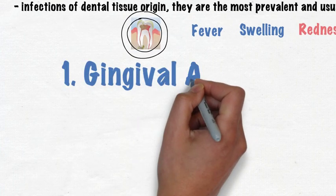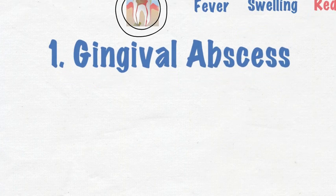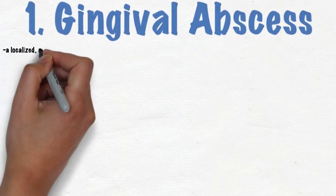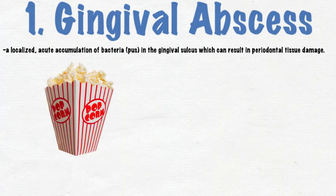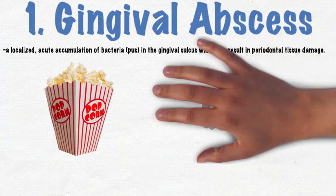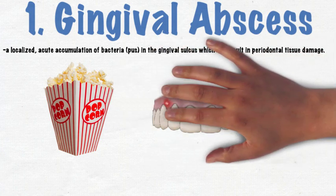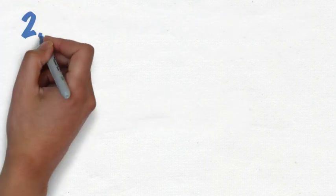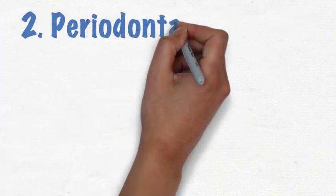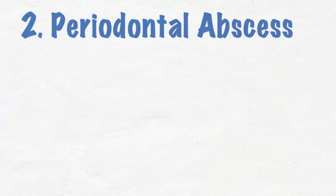The gingival abscess is a common dental emergency. It can be described as a localized, acute accumulation of bacteria or pus in a gingival sulcus, which can result in periodontal tissue damage. It is often caused by a foreign body impaction, commonly by foods such as seeds, nuts, and popcorn kernels.